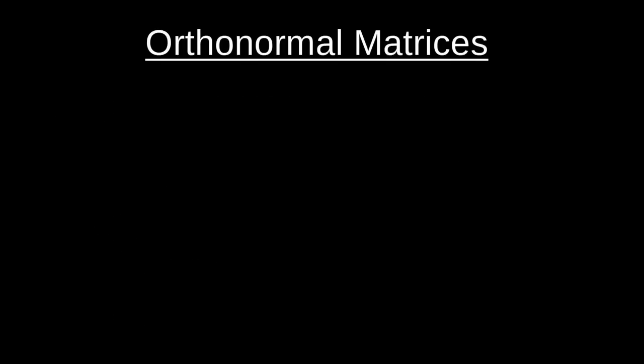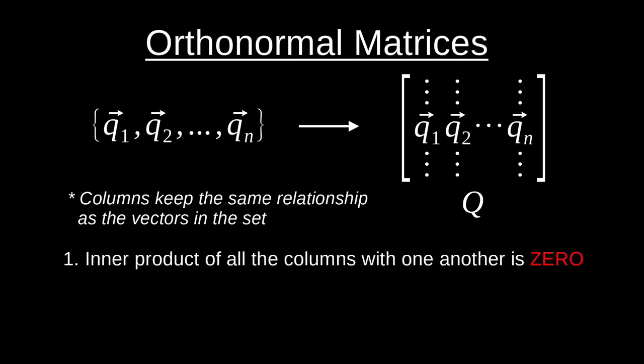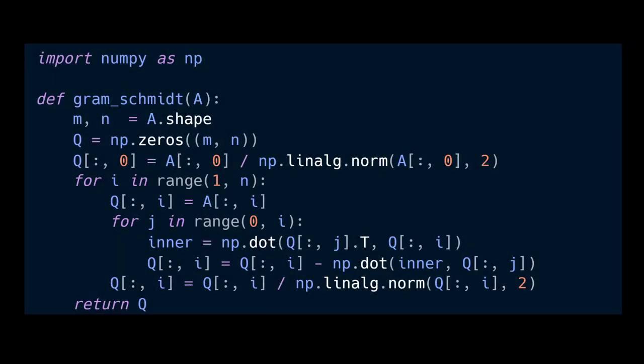Alrighty, so orthonormal matrices are basically just an orthonormal set of vectors that's organized into the columns of a matrix. From here on out, if you see me use this capital Q notation, know that I'm referring to an orthonormal matrix. The awesome thing about this is that the orthonormal matrix columns keep the same relationship as the vectors in our orthonormal set of vectors. So first, the inner product of all the columns with one another is zero, and also each column is normalized so that the two norm is equivalent to one.